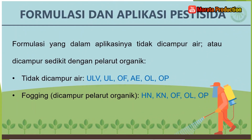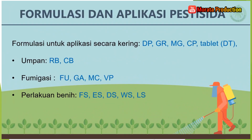Formulasi pesticida yang tidak dicampur dengan air atau dicampur sedikit saja dengan pelarut organik, yaitu: pertama, tidak dicampur air sama sekali, dengan kode formulasi ULV, UL, OF, AE, OL, dan OP. Sedangkan formulasi fogging atau dicampur pelarut organik, yaitu kode formulasi HN, KN, OF, OL, dan OP. Formulasi untuk aplikasi secara kering, dengan kode formulasi DP, GR, MG, CP, dan Tablet atau DT. Dengan cara umpan, ada bentuk RB dan CB. Dengan cara fumigasi atau pengasapan, dengan bentuk FU, GA, MC, dan VP. Dengan cara perlakuan benih, yaitu kodenya FS, ES, DS, WS, dan LS.